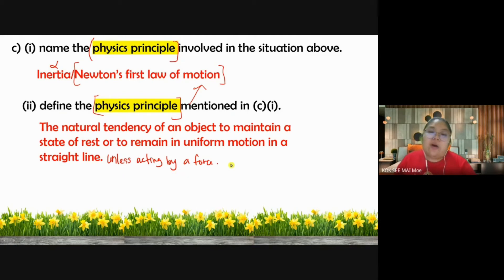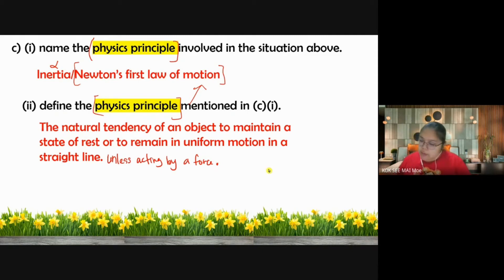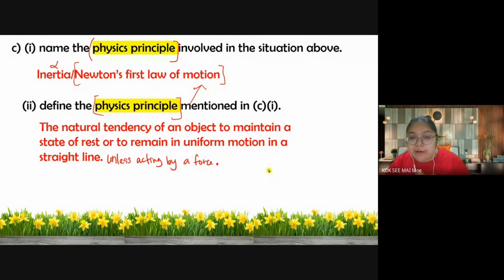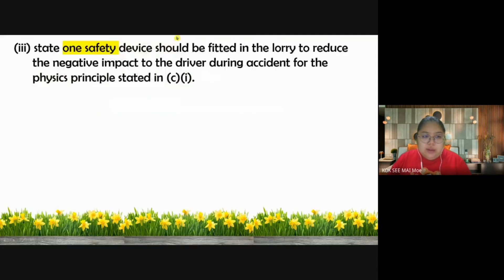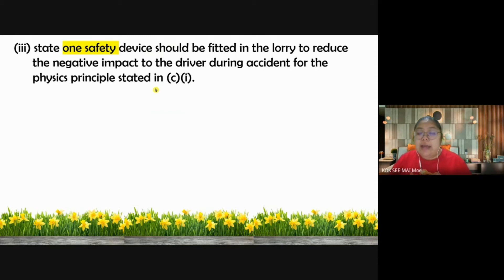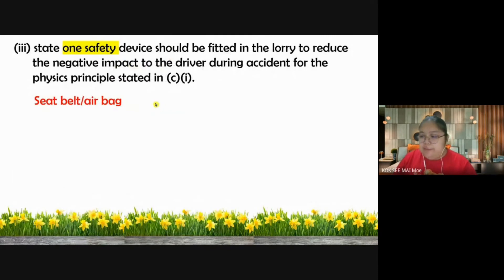When acted upon by a force, the object has no choice but to change. The key is to remember the keywords and use your own sentence to join them - no need to memorize word for word. For the last part: name one safety device to reduce the negative impact on the driver during an accident. Depending on the marks allocated, normally mention seat belt and airbag, or headrest. These are the most important safety devices related to inertia in a car.